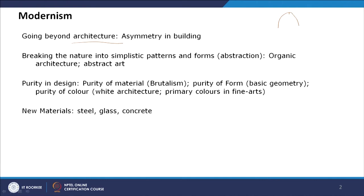Modernism went beyond architecture as we have already seen. Before modernism, architecture was mostly symmetrical. Looking at traditional buildings — through Gothic architecture, classical Greek style which is trabeated, and also Roman style as in the Pantheon and Parthenon — most things were bilaterally symmetrical.